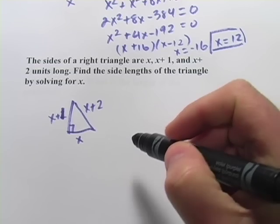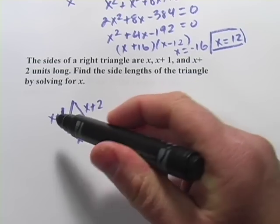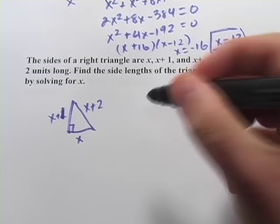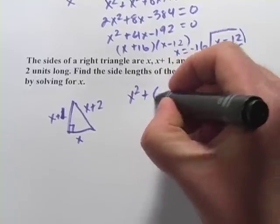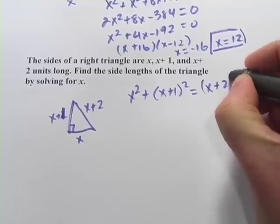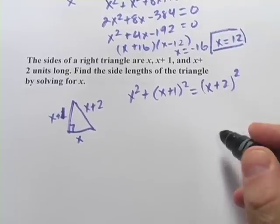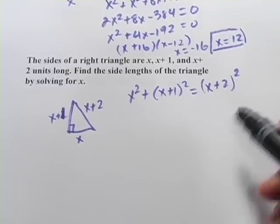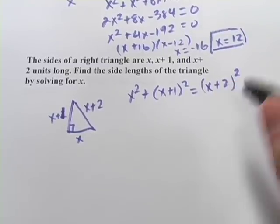So let's go ahead and put this in the form of the Pythagorean theorem. We'll have x squared plus x plus 1 squared equals x plus 2 squared. And then we just have to multiply all this out, combine the results, set it equal to 0, and solve the quadratic. So let's go ahead and do that.